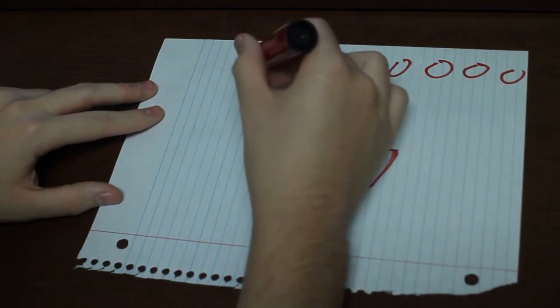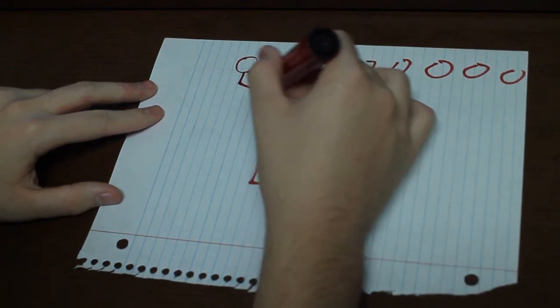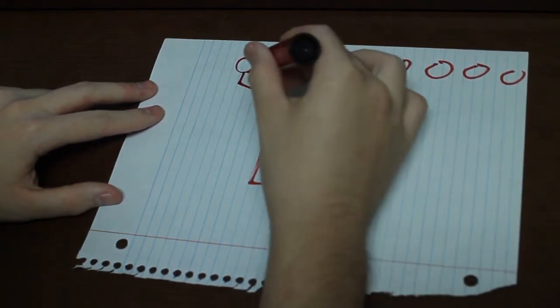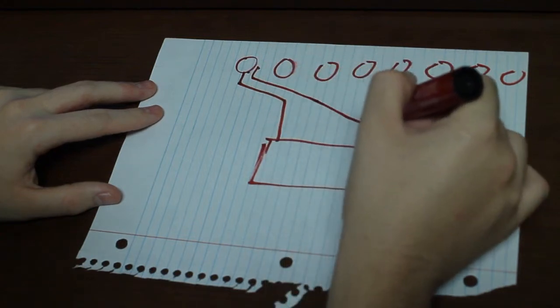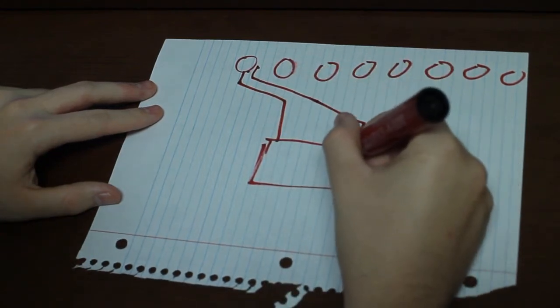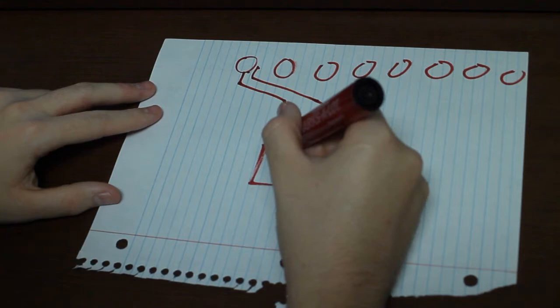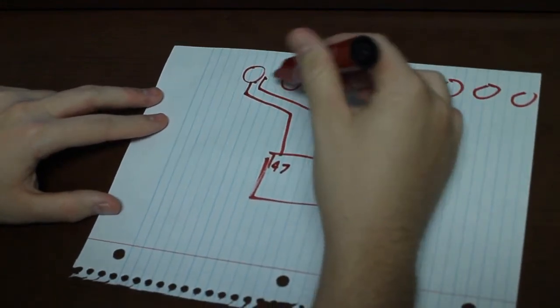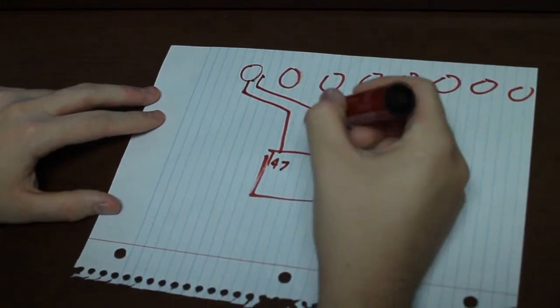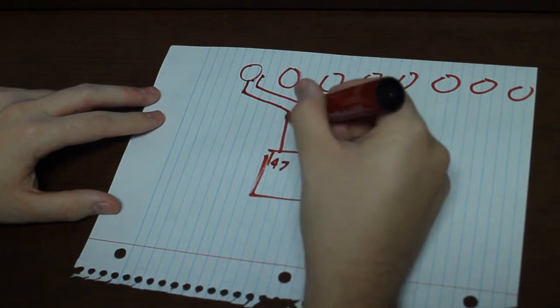One of these. And then each one of these has two pins. One goes into the analog, and then the other one goes into the ground. Here's analog. Here's analog. Eight. Six. Analog. Seven. Seven. So each one of these gets plugged into the ground, analog seven, and then across it is a resistor.